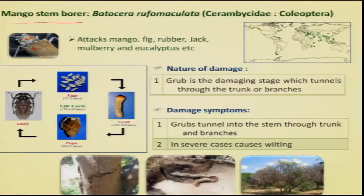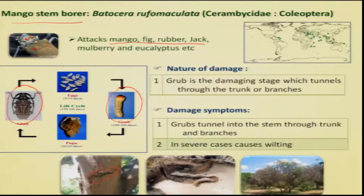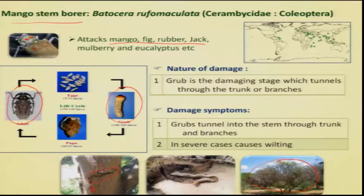The mango stem borer is an occasional pest mainly seen in old or neglected orchards. It is polyphagous and apart from mango also attacks other fruit trees. The adults, which are quite large, lay eggs on the tree trunk. The grubs enter the stem or branches after hatching and feed on the internal content. Externally, cracking of bark, gummosis, and accumulation of frass at the base of the plant indicate the presence of grubs. Young plants less than three years old are severely affected, and sometimes the whole plant may die or the affected branch is damaged or dried.